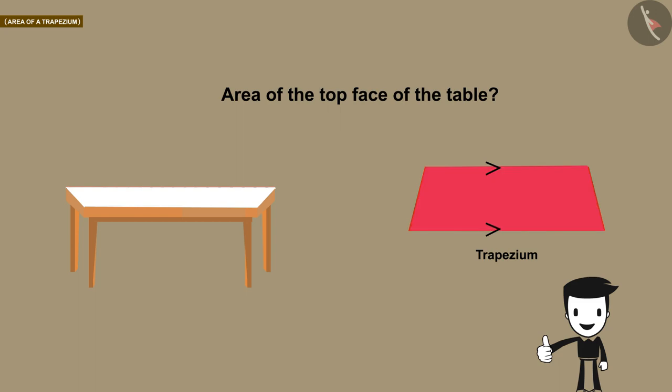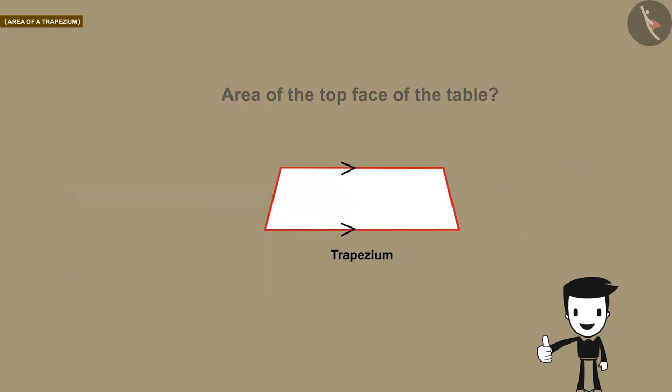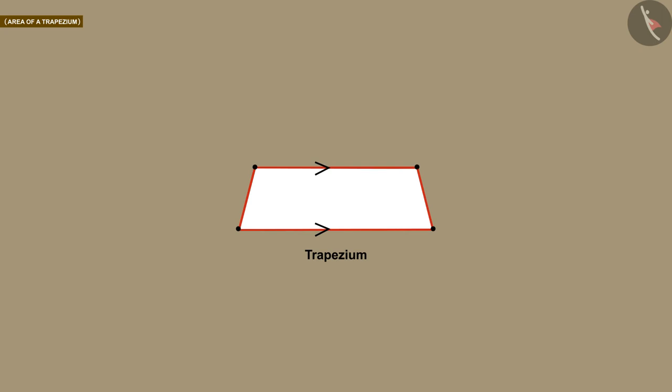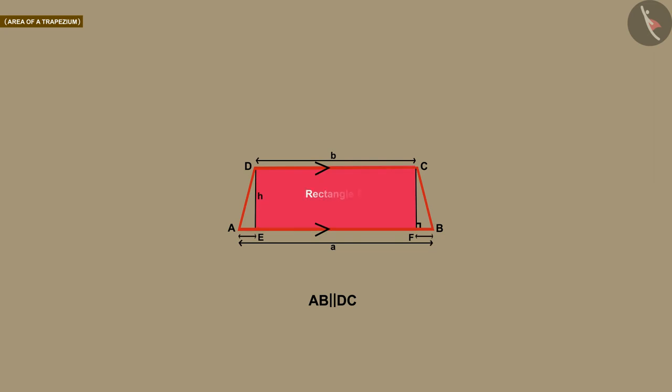Kritika names the four corners of the table as A, B, C, and D. Now in a pair of parallel sides, Kritika draws a perpendicular from the shorter side to the longer side and marks all measurements. She sees a rectangle EFCD by drawing perpendiculars.